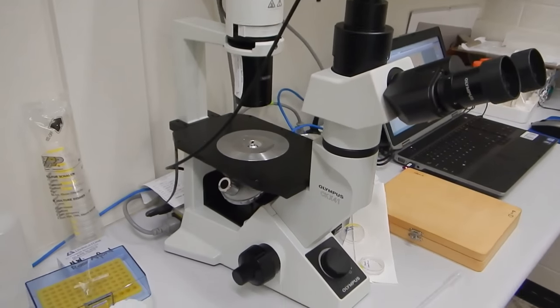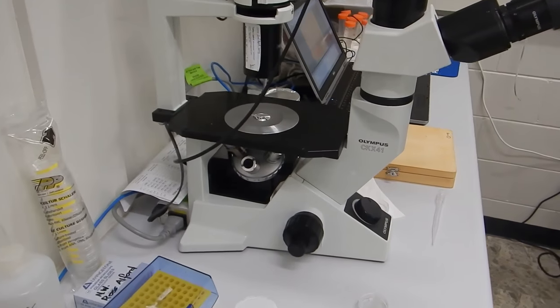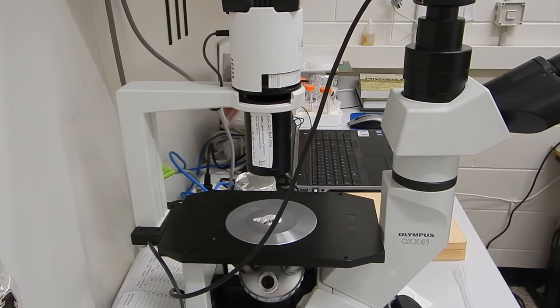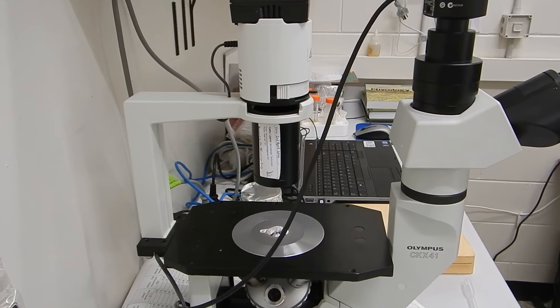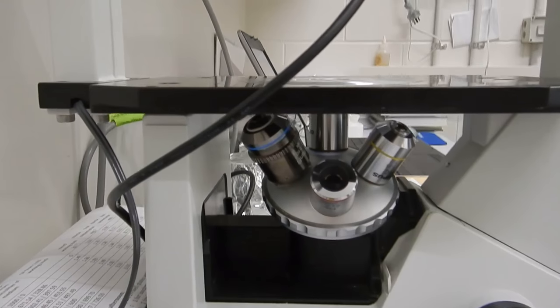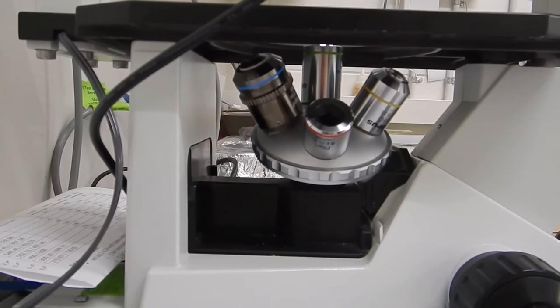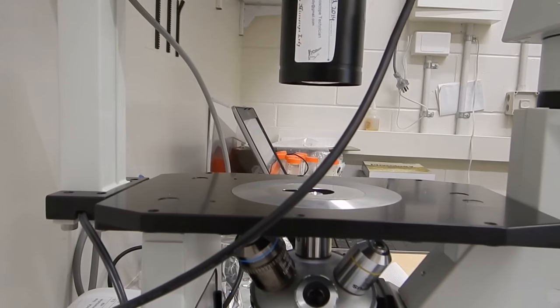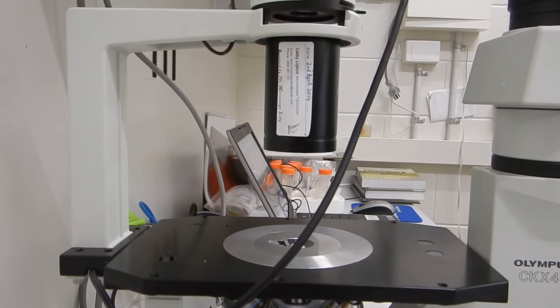Over here is an inverted microscope. Normally microscopes have a lens on top looking down at a specimen with light shining through, but here the lenses are on the bottom pointing upwards. The specimen goes there, and the light's on top shining down.